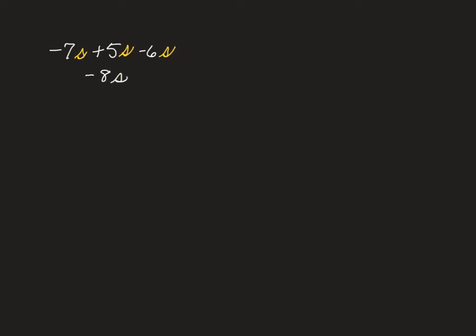We're going to work with radicals in much the same way. So let's do our first example of a radical expression where we're going to be adding and subtracting. Negative 7 square root of 3 plus 5 square root of 3 minus 6 square root of 3 will turn out to be negative 8 square root of 3. Just like it was when instead of square root of 3, we had s.